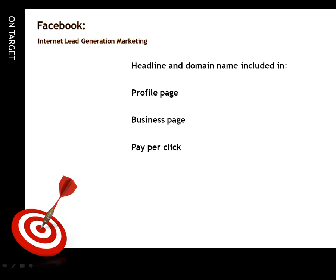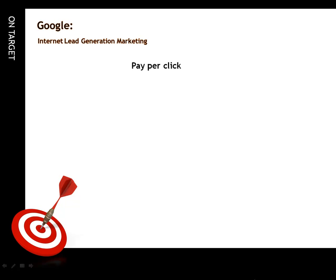This also works very well with Facebook, where you would put the captivating headline and the link on the profile page, business page, and more importantly, the pay-per-click. This is a very good system for pay-per-click because of the follow-up. It's very specific — you don't pay for that link unless somebody clicks on it, and generally nobody's going to click on that link unless that particular condition applies to them. And with Facebook, what's great is you have demographics and psychographics that you can choose, unlike Google which is just demographically based. However, you can use it in Google with pay-per-click likewise.